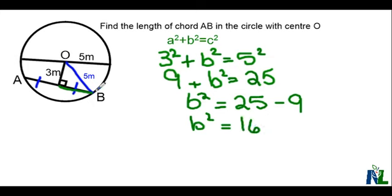I'm not interested in the side squared. I want the side length itself, so I'm going to use square root. So b is the square root of 16, and that tells me that b is 4, because 4 × 4 = 16. So 4 meters.